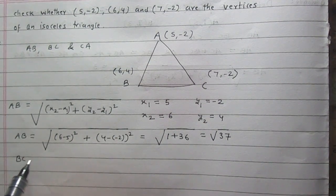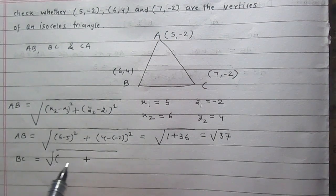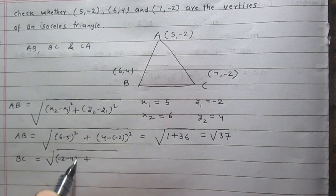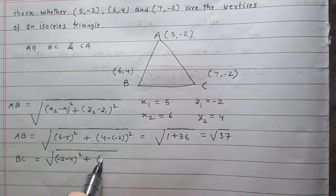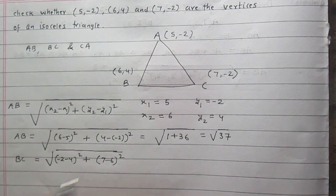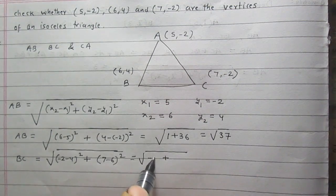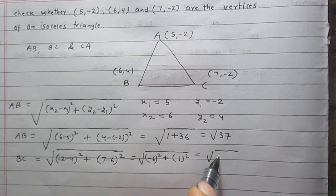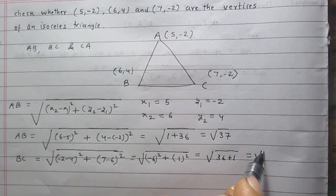For distance BC, using the same distance formula: BC = √((-2-4)² + (7-6)²) = √((-6)² + 1²) = √(36 + 1) = √37.